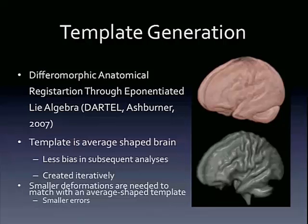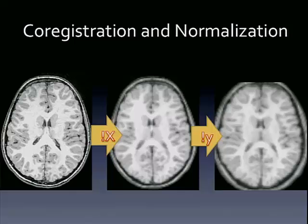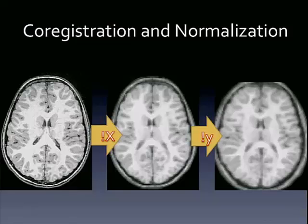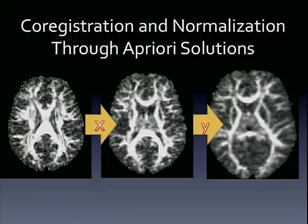Then all we do is co-register and normalize. Here's the original T1 data. It gets co-registered — we compute the solution, and the solution is X. Then we take that co-registered data and normalize it — we compute the solution, and the solution is Y. Once we have that, all we have to do is take our FA map, apply solution X so it's co-registered, apply solution Y so it's normalized. And that's pretty much it.